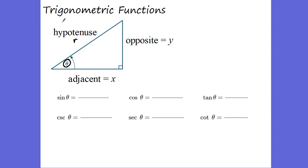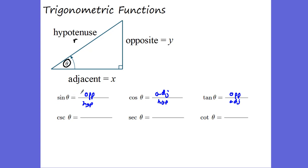So if I want to know what the sine of this angle is, sine is always opposite over hypotenuse. Cosine is the adjacent over the hypotenuse. And the tangent is going to be the opposite over the adjacent. You've probably heard of SOHCAHTOA before — it's a mnemonic device: Sine-Opposite-Hypotenuse, Cosine-Adjacent-Hypotenuse, Tangent-Opposite-Adjacent.